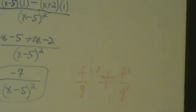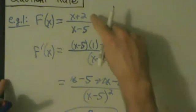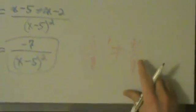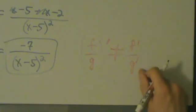f over g primed is not the same thing as f primed over g primed. What would happen if we tried that here? Derivative of the top is 1, derivative of the bottom is 1. So if we try to do it like this, then we would just end up with 1 divided by 1, which is 1.